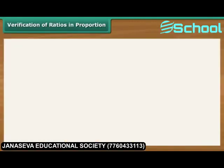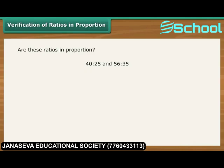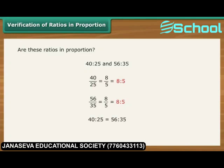Verification of ratios in proportion. Consider the two ratios: 40 is to 25 and 56 is to 35. 40 by 25 is the same as 8 by 5, that is 8 is to 5. 56 by 35 is also the same as 8 by 5, that is 8 is to 5. Therefore, 40 is to 25 is equal to 56 is to 35. In other words, 40 is to 25 as 56 is to 35 — the ratios are in proportion.